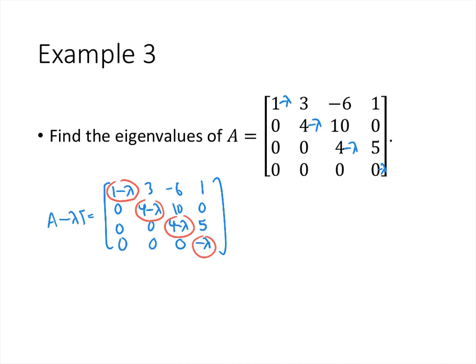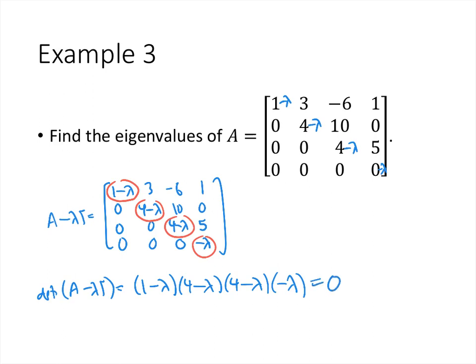So the determinant of A minus lambda I is just (1 minus lambda)(4 minus lambda)(4 minus lambda)(negative lambda). We could multiply this out, but that would be counterproductive. The goal is to set this polynomial equal to zero and solve. In factored form, the eigenvalues are lambda equals 1, lambda equals 4, lambda equals 4, and lambda equals 0.